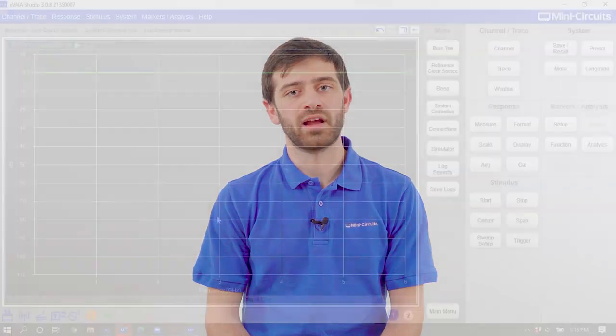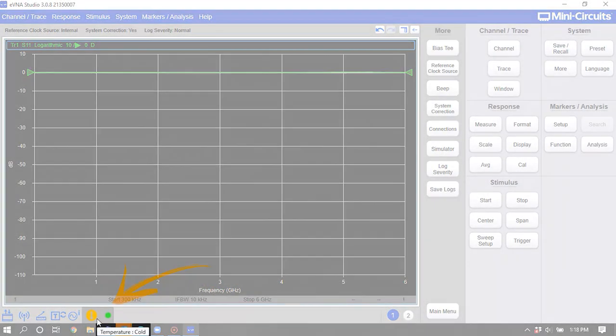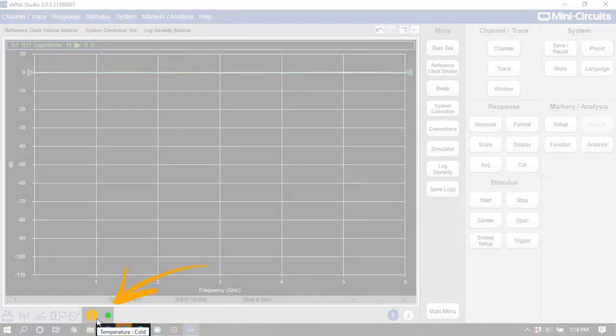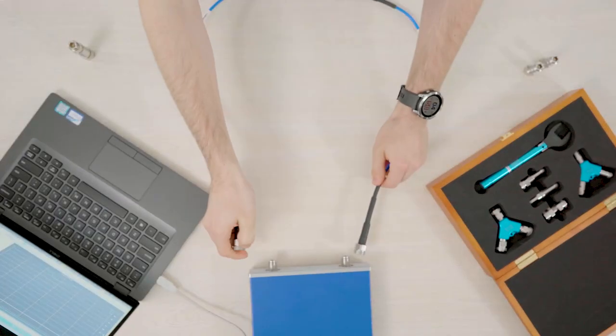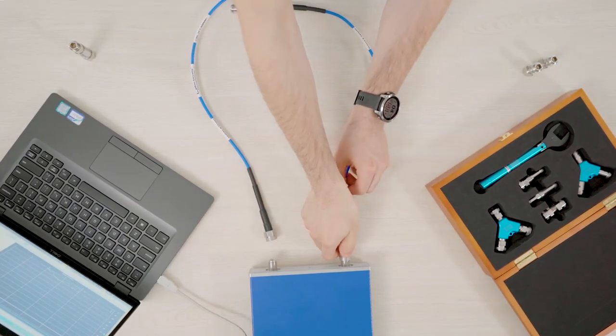Before you start the calibration process, allow the instrument to warm up for about 15 minutes. The temperature indicator in the eVNA Studio software will turn green when it reaches a stable temperature. At this point, connect any required connectors, cables, or adapters between the VNA and the device under test.